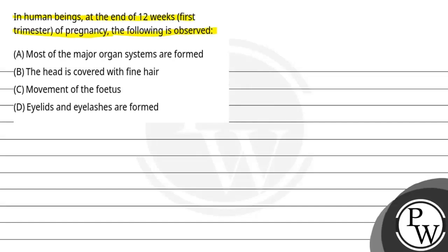The question asks when the first trimester of pregnancy is completed, means that 12 weeks are completed, then what happens in the fetus? First, most of the major organ systems are formed.